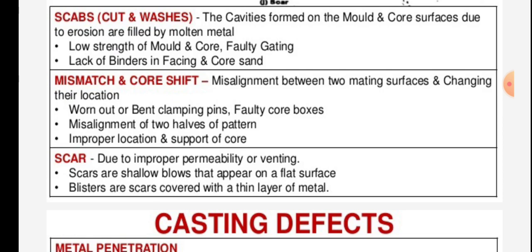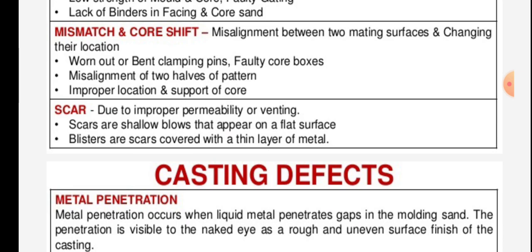Mismatch and core shift involve misalignment between two mating surfaces, changing their location. Causes include worn-out or bent clamping pins, faulty core boxes, misalignment of the two holes of the pattern, and improper location and support of the core.